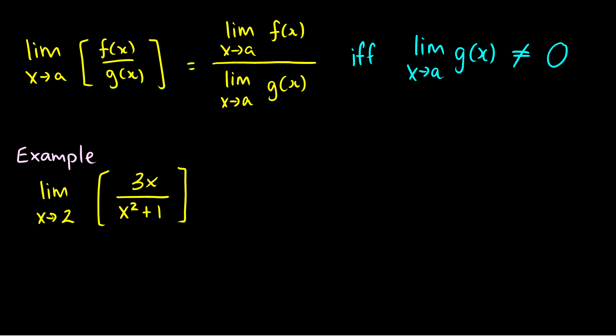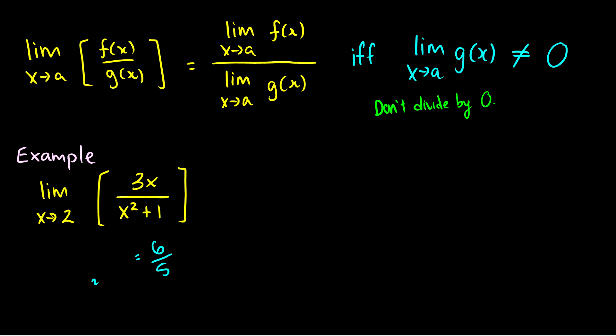The last law I'll talk about is the division law. The limit as x goes to a of f of x over g of x is the same thing as the limit as x goes to a of f of x, divided by the limit as x goes to a of g of x — but only if the limit as x goes to a of g of x is not equal to zero. In other words, don't divide by zero. Here's the example: the limit as x goes to two of three x over x squared plus one. Plugging in two gives three times two over two squared plus one, which is just six over five.